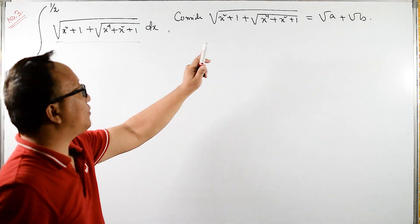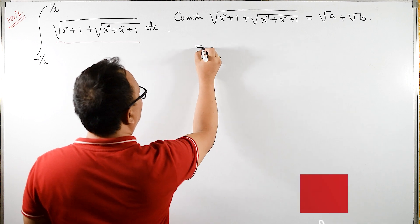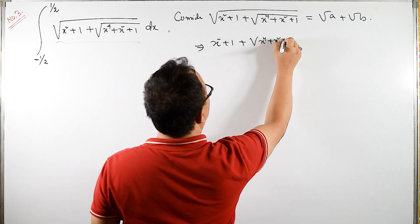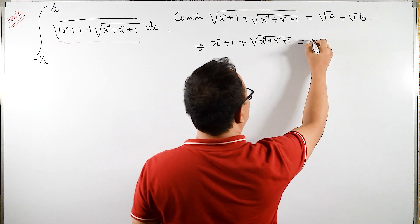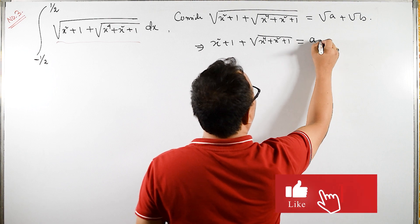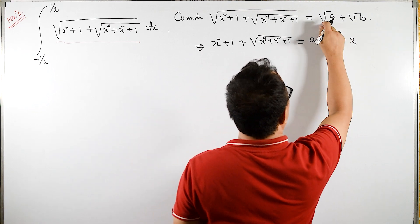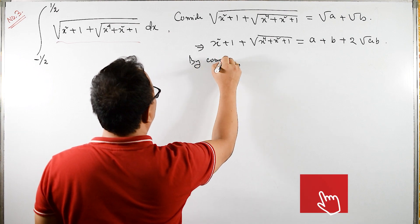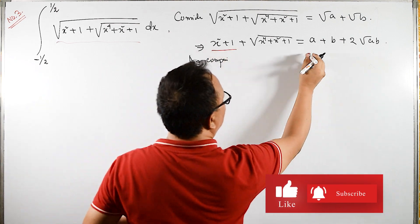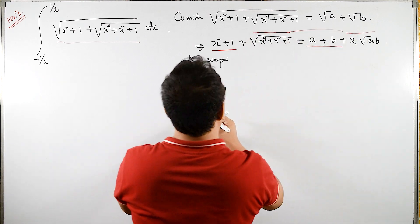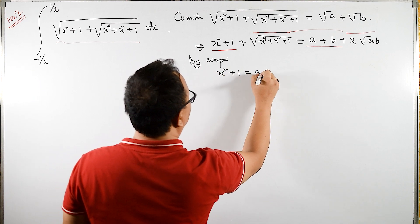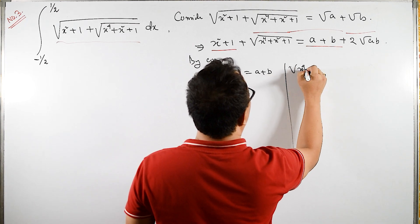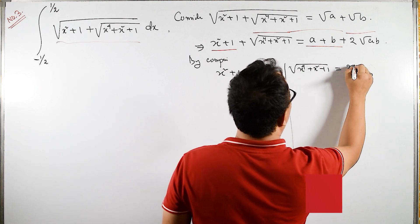We need to find A and B in terms of x. Squaring on both sides, we have x² + 1 + x·√(x⁴ + x² + 1) equals (√A + √B)² which expands to A + B + 2√(AB). By comparing, x² + 1 equals A + B, and √(x⁴ + x² + 1) equals 2√(AB).